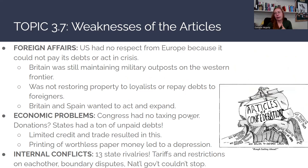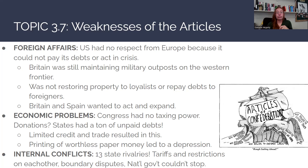Some weaknesses of the Articles: in terms of foreign affairs, the U.S. had very little respect from Europe because it couldn't pay back its debts or act in a crisis. They weren't able to generate taxes to pay back debts to Britain or France. Britain was still maintaining military outposts on the western frontier with forts in the Ohio Valley. They were also not restoring property to loyalists as promised in the Treaty of Paris. Britain and Spain, not getting their debts repaid, started thinking about encroaching on American territory, knowing the U.S. was a very weak nation.